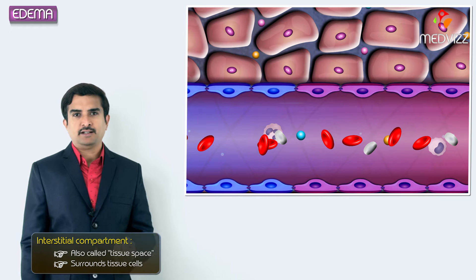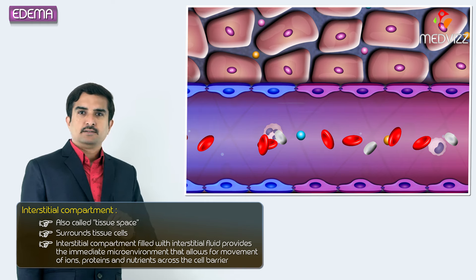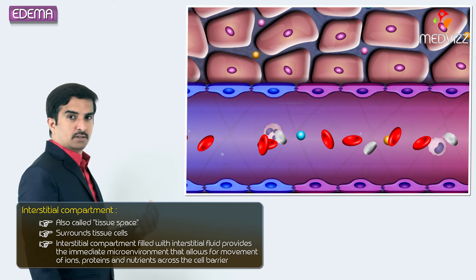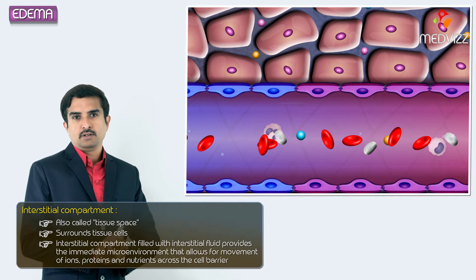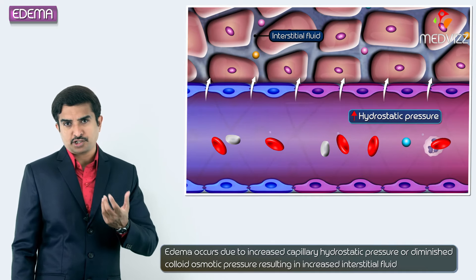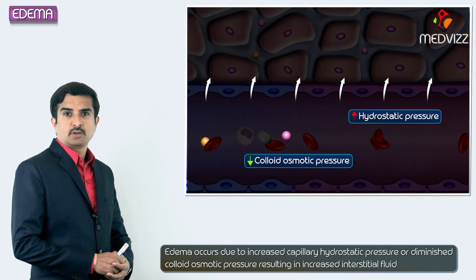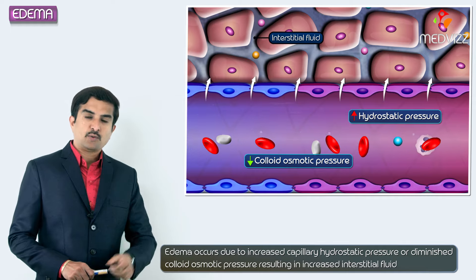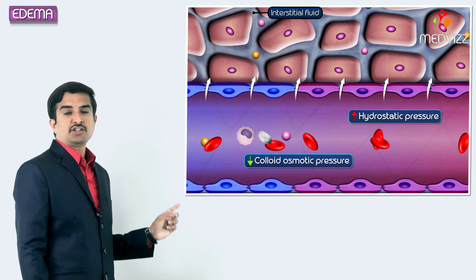The interstitial fluid provides the immediate micro-environment that allows the movement of ions, proteins, and nutrients across the cell barrier. Edema occurs mainly due to increased capillary hydrostatic pressure or diminished colloidal osmotic pressure. Whenever there is an increase in capillary hydrostatic pressure or a decrease in colloidal osmotic pressure, it results in increased interstitial fluid — the main cause for the development of edema.